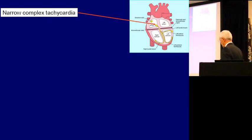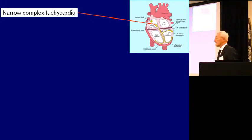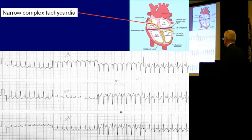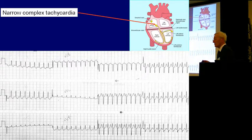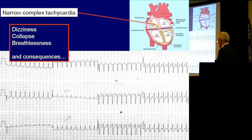Some people, like my daughter, get narrow complex tachycardia where the atria, the top of the heart, starts sending lots and lots of signals to the bottom of the heart. And the regulator does its best to calm things down, but unfortunately it's fighting a losing battle. The heart here is going very, very fast. They're called narrow complexes because the total beat is narrow. That's easier to treat but it does cause dizziness, collapse, and breathlessness.